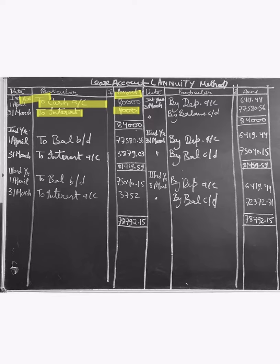On March 31st, we show the interest of 4,000. Depreciation is fixed at 6,419.44. When we add these two, we get 84,000. 84,000 minus 6,419.44 gives us a balance of 77,580.56, which is balance carried down.